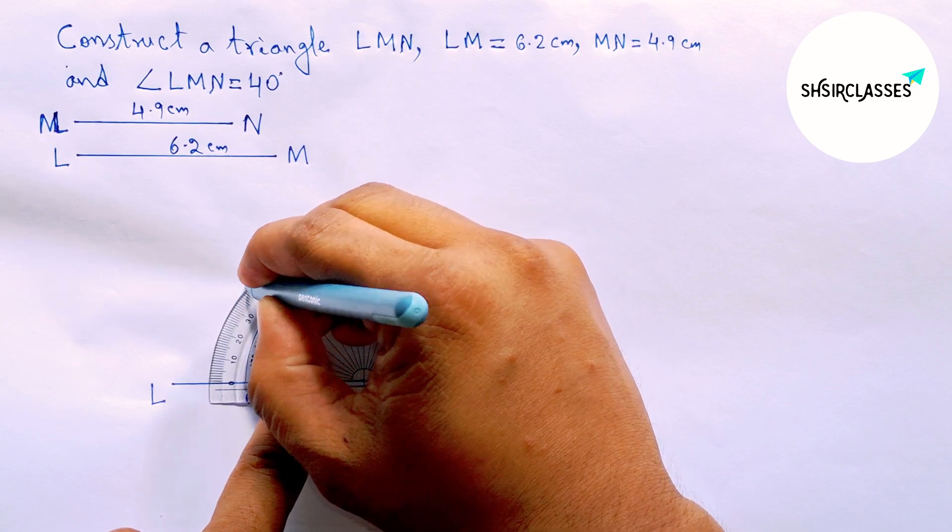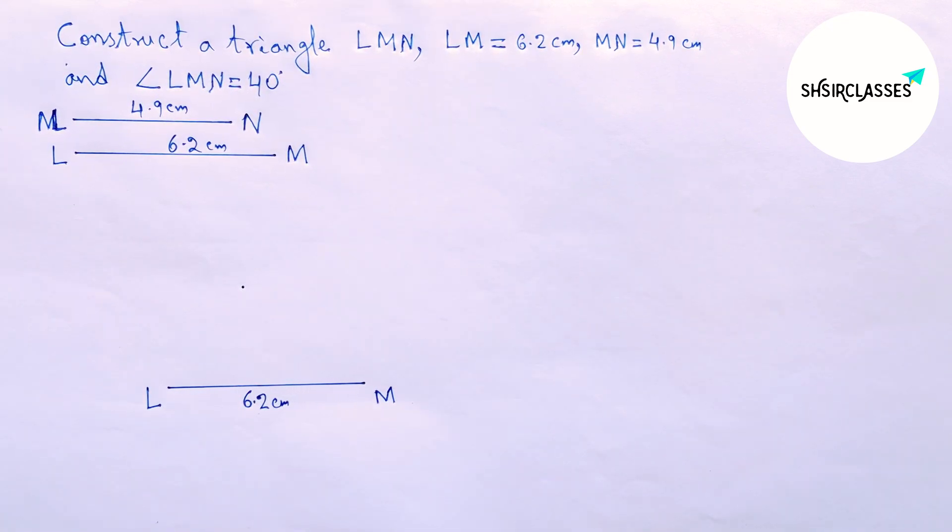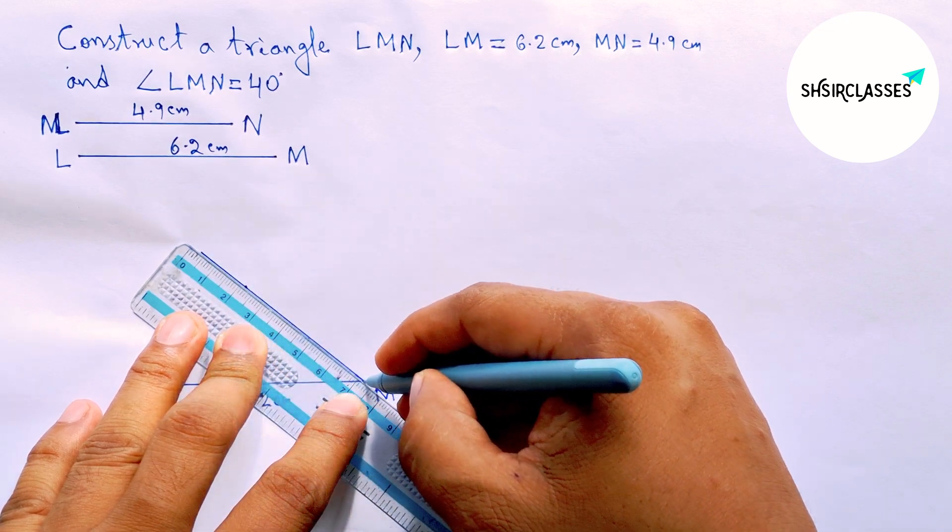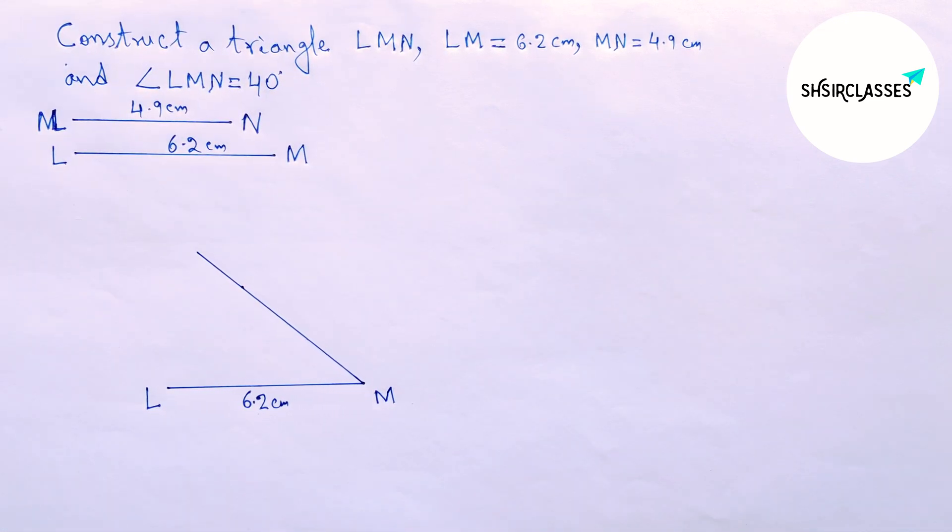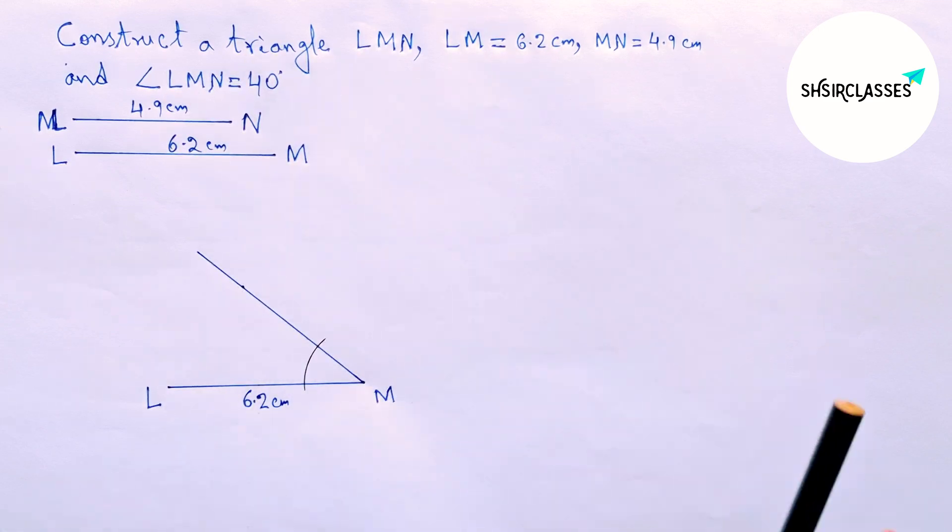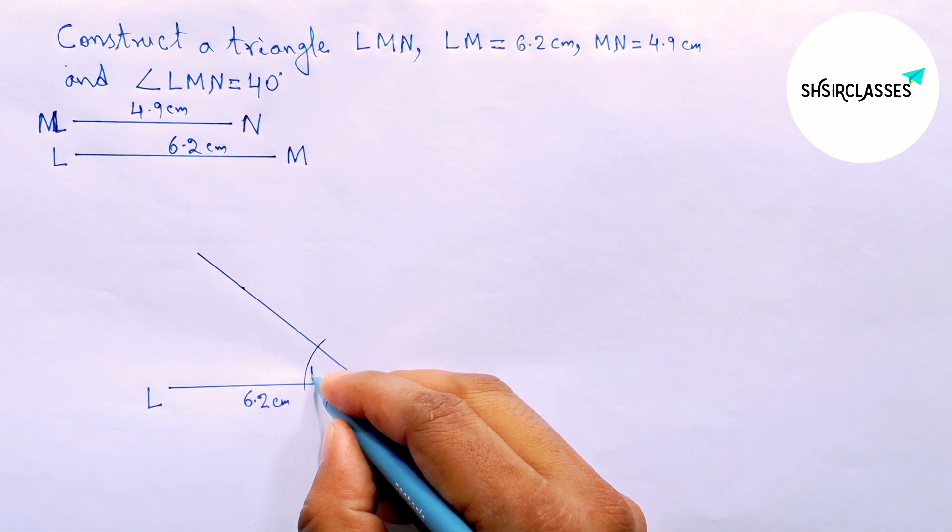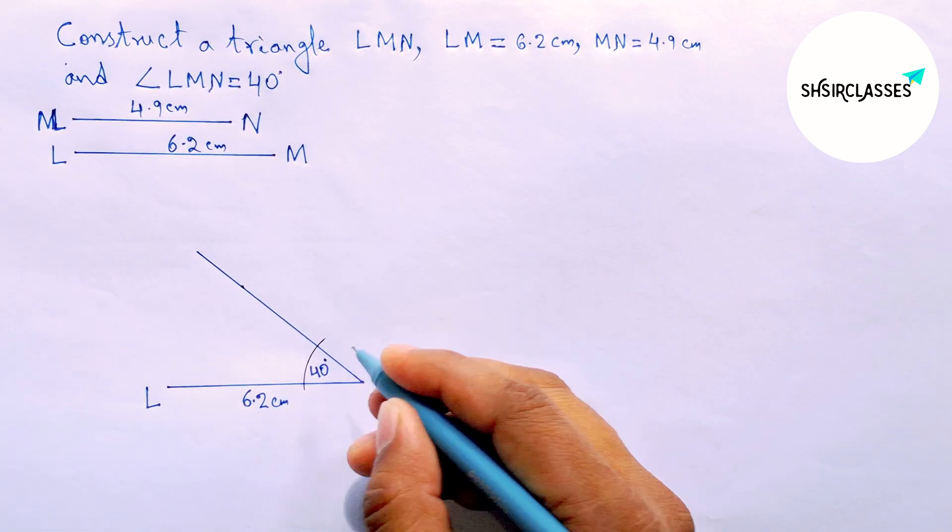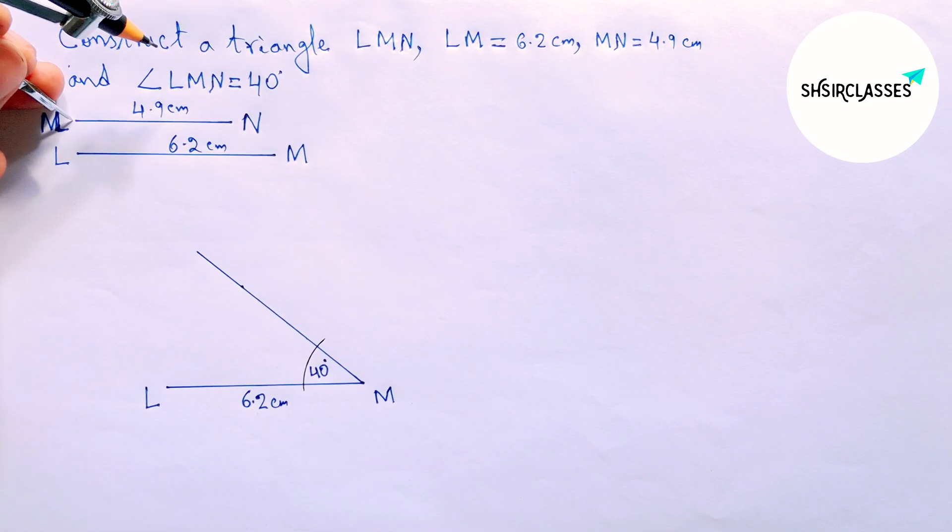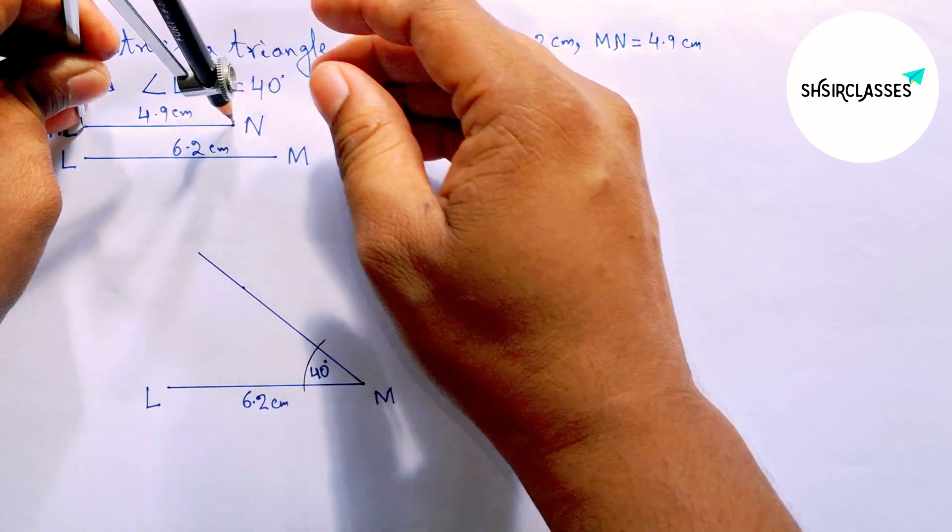This is 40 degrees - marking 40 degrees. Now joining and drawing an arc this way. This is the 40-degree angle. Next, measuring MN equal to 4.9 centimeters with the help of a compass, putting the compass on point M and cutting here to mark point N.